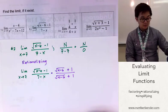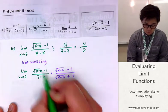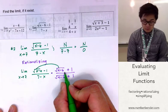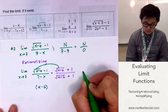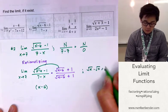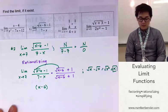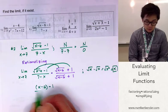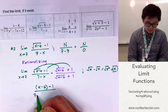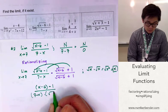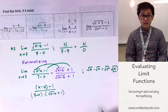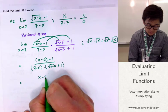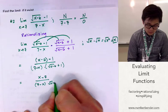When we multiply by the conjugate of the numerator, the square root of x minus 6 times itself gives x minus 6, because the square root of x times itself equals x. And negative 1 times 1 gives negative 1. So the numerator becomes x minus 6 minus 1, all over 7 minus x multiplied by square root of x minus 6 plus 1.